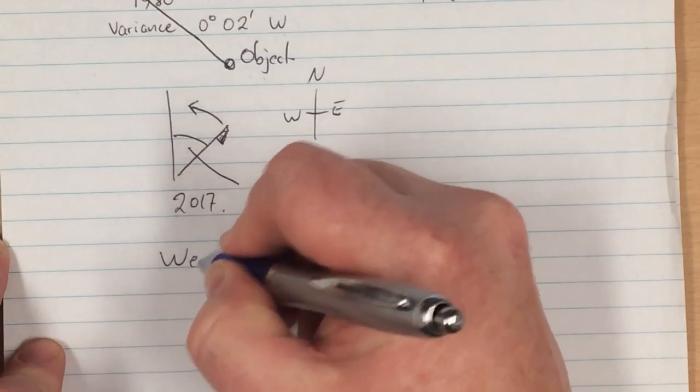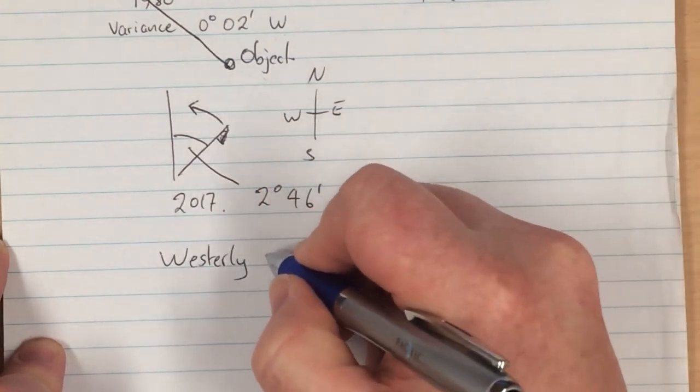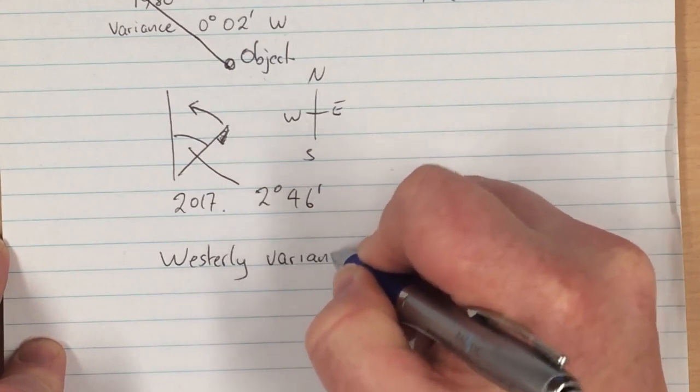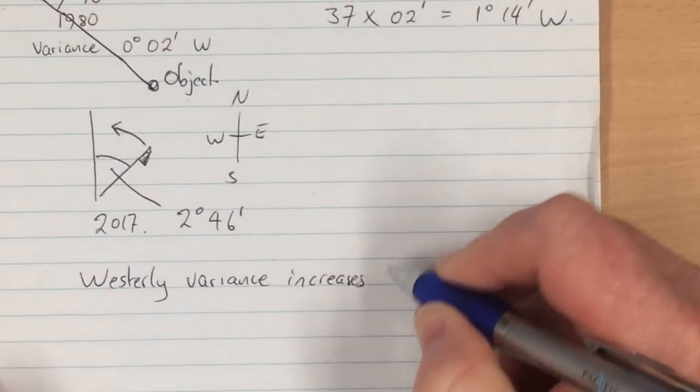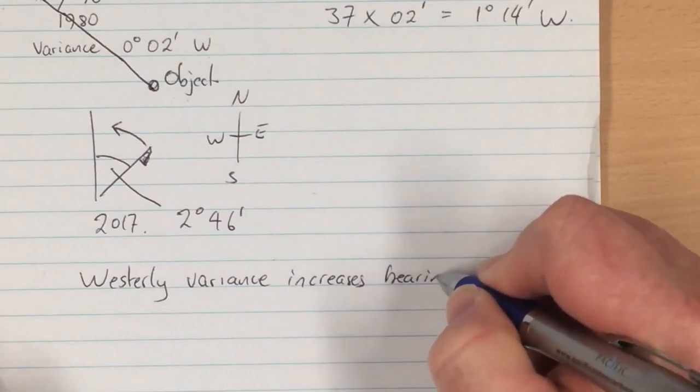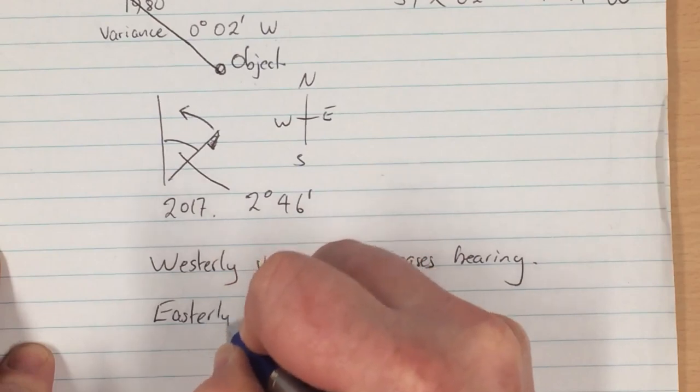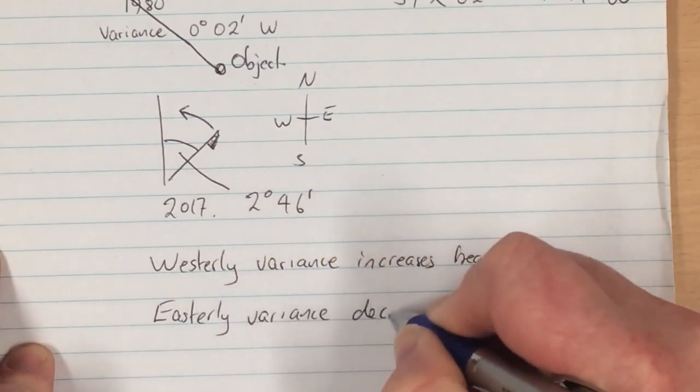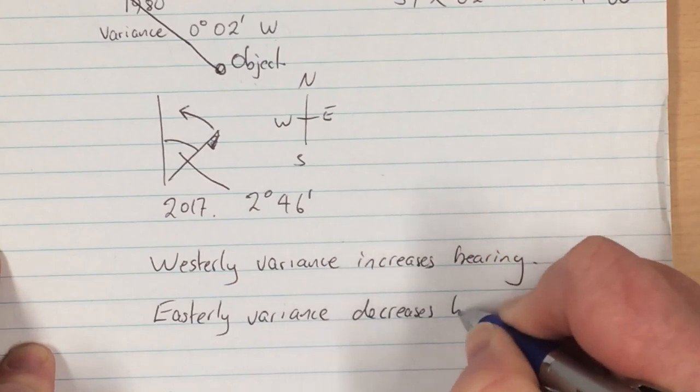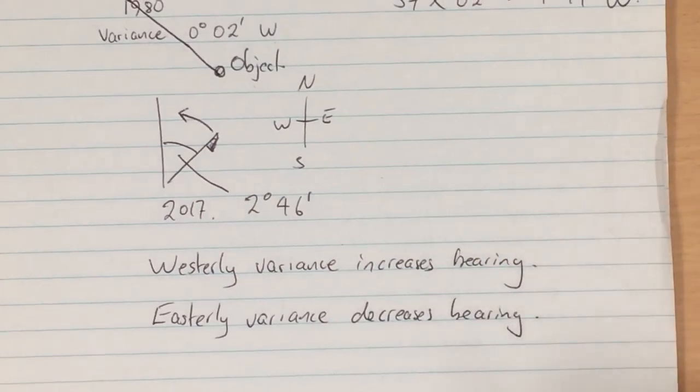So a westerly variance increases the bearing. And an easterly variance decreases the bearing of an object, the magnetic bearing of an object.